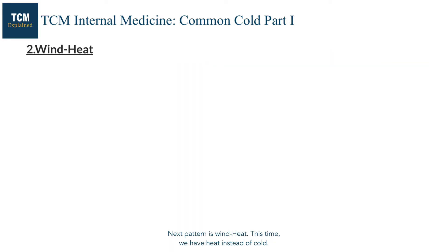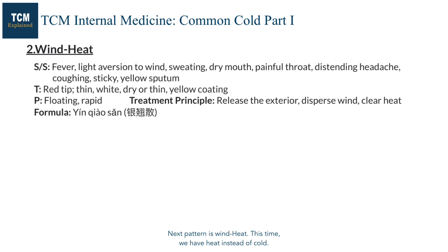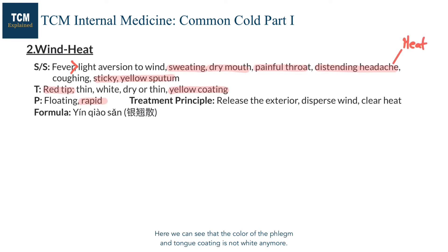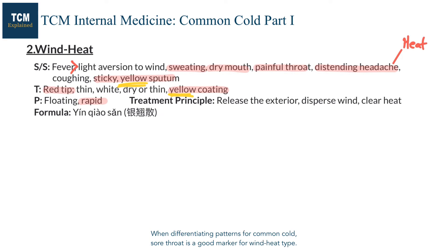The next pattern is wind heat. This time we have heat instead of cold, so fever is more pronounced than aversion to wind. There will be other heat signs and symptoms. The color of phlegm and tongue coating is no longer white but yellow, indicating heat. When differentiating patterns for common cold, sore throat is a good marker for the wind heat type. For wind heat, we disperse wind and clear heat.